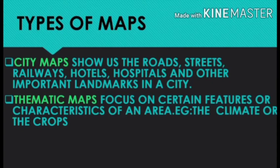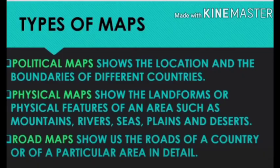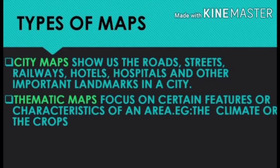The next type of map is a thematic map. It focuses on certain features or characteristics of an area, such as the climate or crops of a particular area. This is a thematic map of India showing natural vegetation — the types of plants found in a particular area. The different types of maps are political, physical, road, city, and thematic maps.